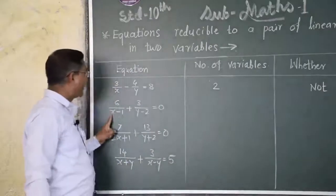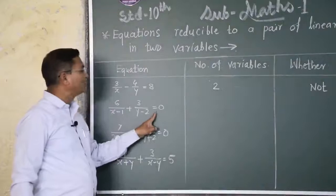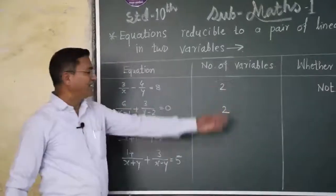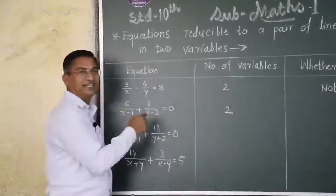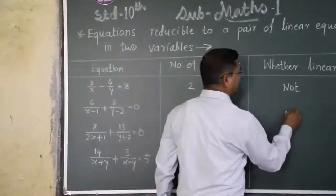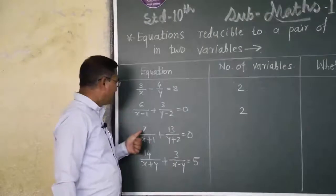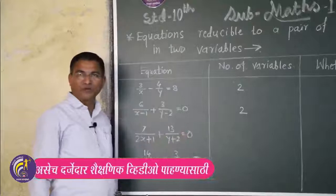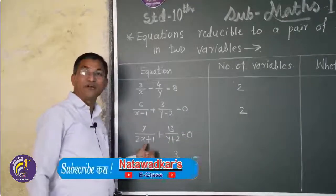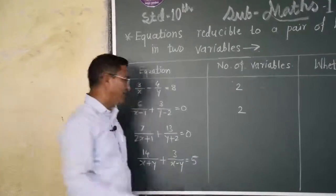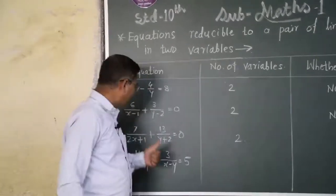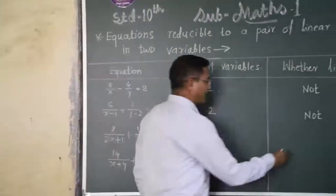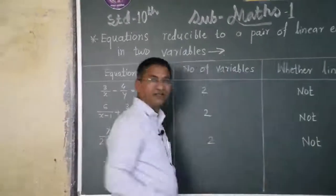Similarly, 6 upon x minus 1, plus 3 upon y minus 2, is equal to 0. There are two variables here. But if we simplify it, it is not a linear equation. Therefore, it is not a linear equation in two variables.